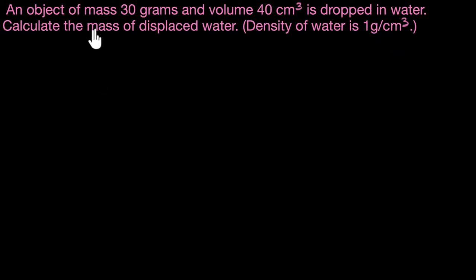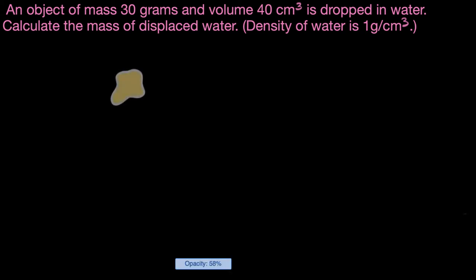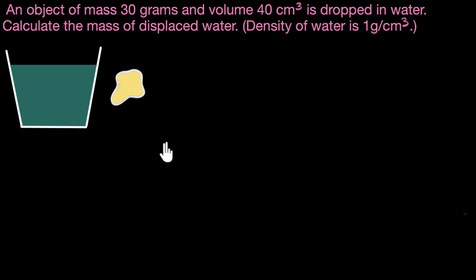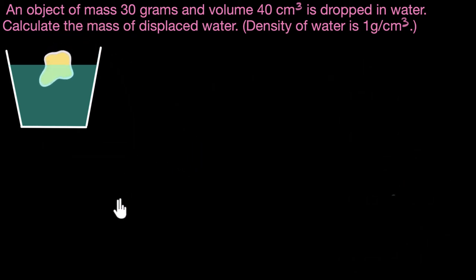Let's first try and draw the situation and then see how to solve it. We are given an object of mass 30 grams — imagine it's a stone. We know its mass and we know its volume. It's dropped in water, so let's say we have a container with water and we take this stone and drop it in. We're asked to calculate the mass of displaced water.